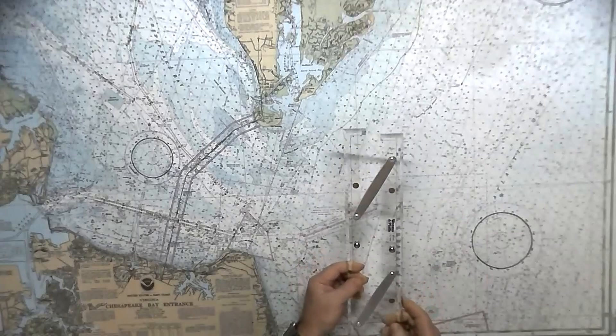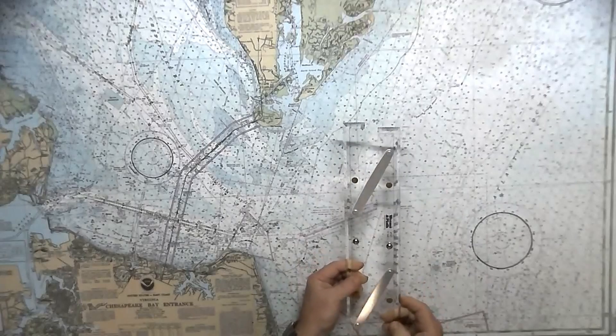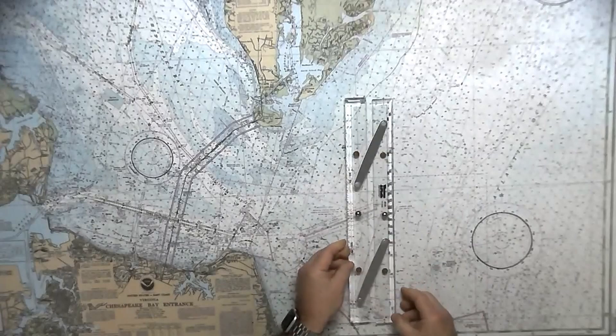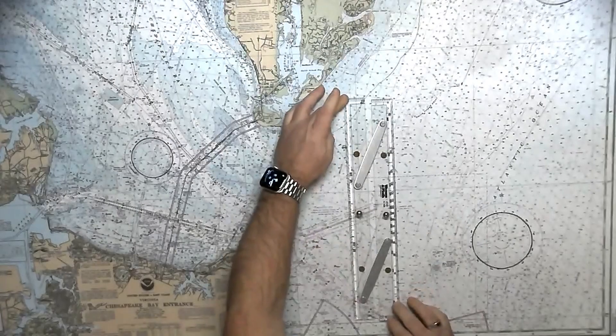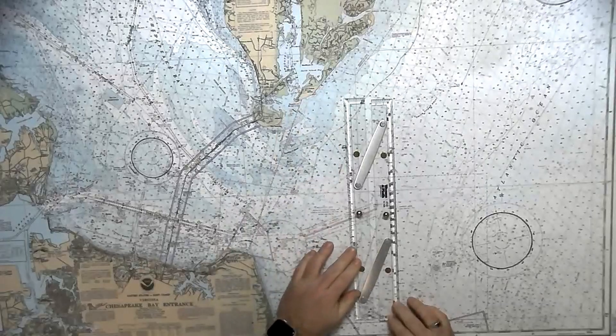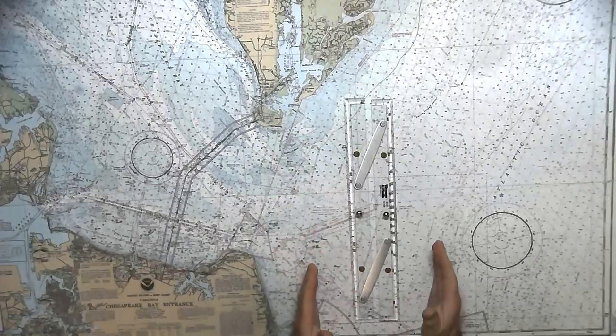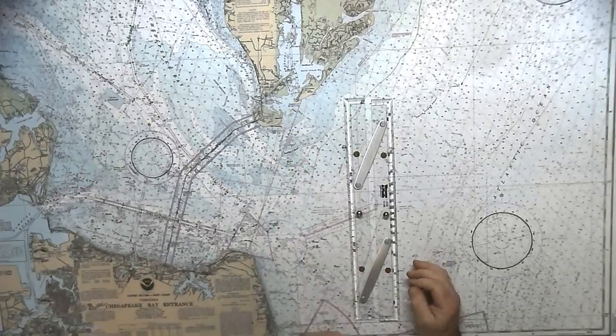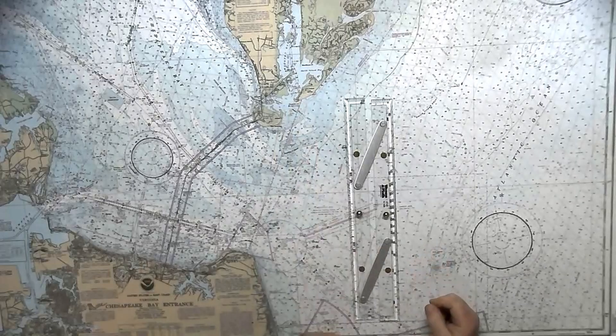This particular set of parallel rules is the Williams and Plath number 141. It is a 15 inch model which is measured from here to here. They do make 12 inch models which are perfectly fine for class, but the longer models give you a little bit easier ability to do some of the markups that we have to do on the chart.